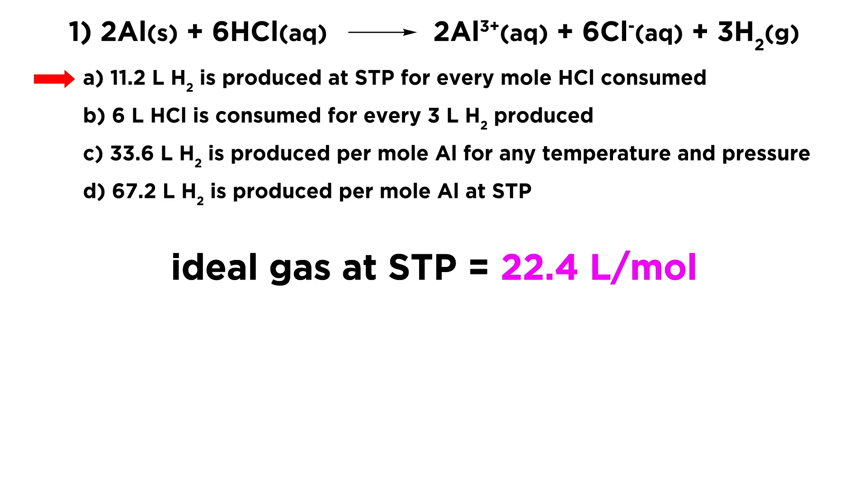Let's go through these options. The first thing we're asking is, is it possible that 11.2 liters of hydrogen is produced at STP for every mole of HCl that is consumed? Looking at the stoichiometric ratio, we're seeing that six moles of HCl will be involved in order to produce three moles of H2. So that means however many moles of HCl we start with, we're going to get half as many moles of H2.